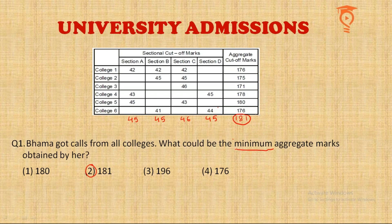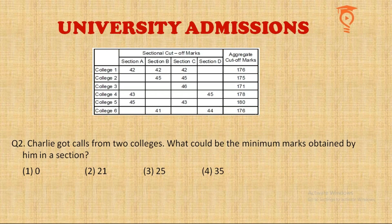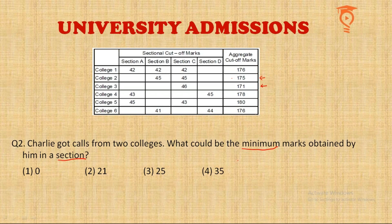The second question: Charlie got calls from exactly two colleges — what is the minimum score he could have in a single section? We want to minimize his score in one section. To do this, we select the two colleges with the lowest overall aggregate requirements, which are 171 and 175 — that is, Colleges 3 and 2. Choosing a college that requires 180 would force us to increase his marks, so the lower aggregates give us more room to reduce his sectional score.